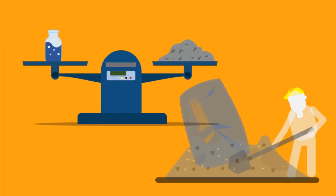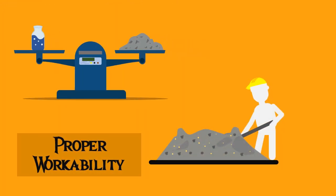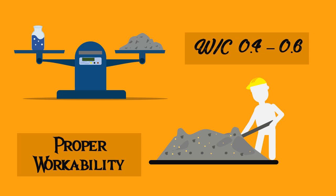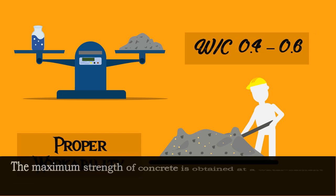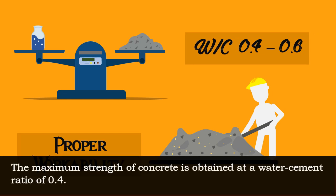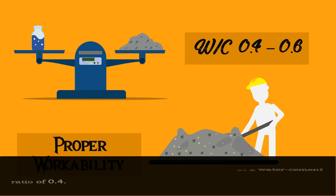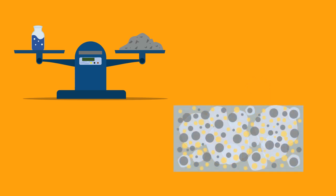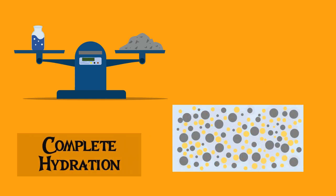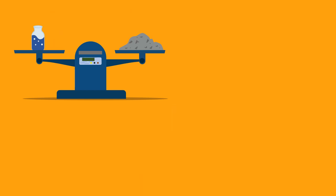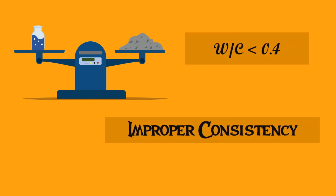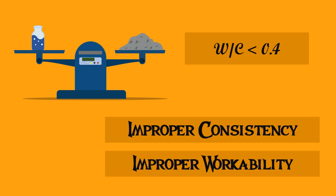For proper workability, the water cement ratio varies from 0.4 to 0.6. However, the maximum strength of concrete is obtained at a water cement ratio of 0.4. Besides, we know that for a complete hydration of concrete the water requirement is about 38%. If the water cement ratio is decreased less than 0.4, there may be improper consistency and workability.